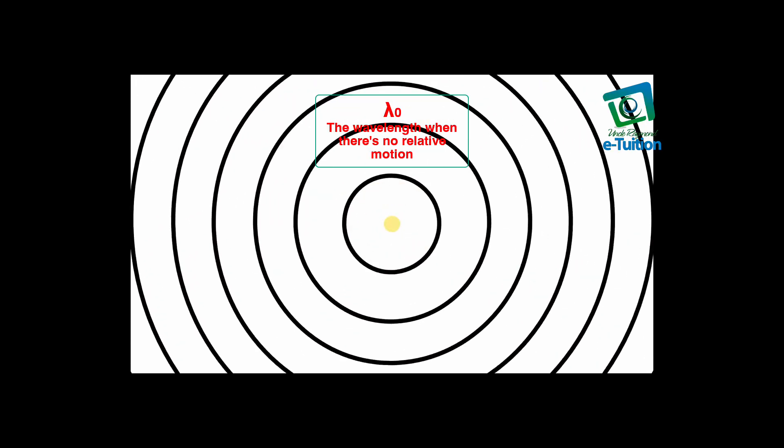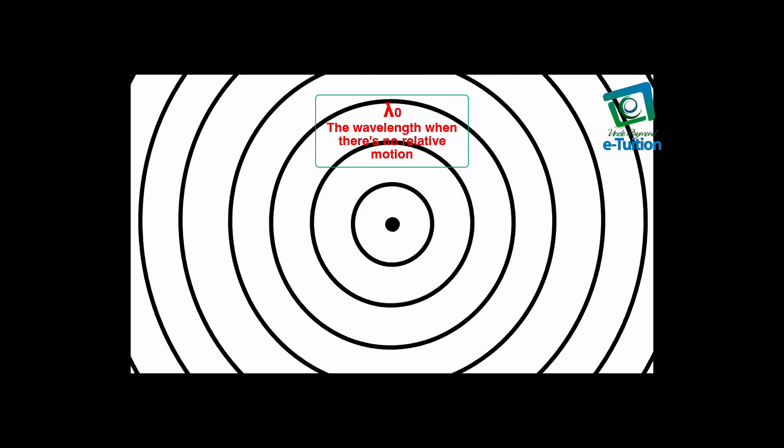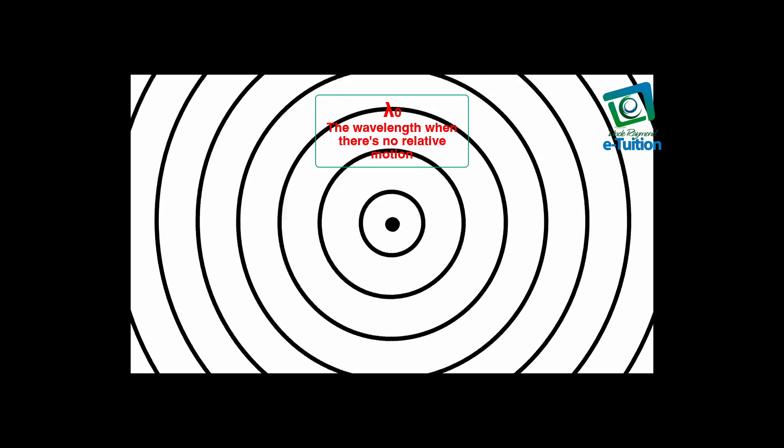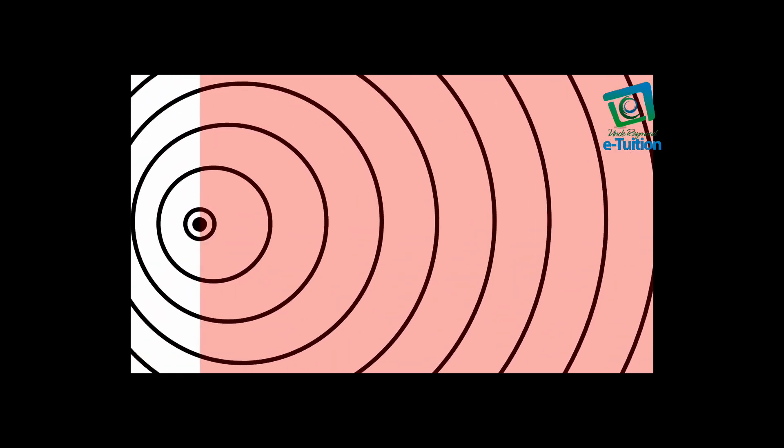So here's the thing that emits waves. It could be a fire truck emitting sound, it could be a star emitting light, it could be a duck creating ripples on a pond. Those are all waves and they all look something like this. We see the Doppler effect happening when the thing that is emitting waves moves. In the direction it's moving, the wave front bunches up and behind it spreads out.